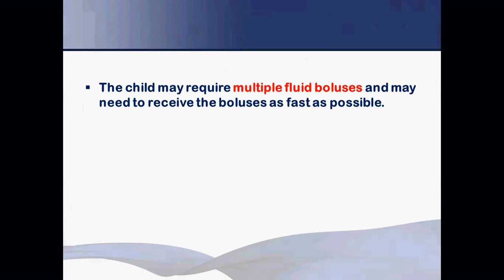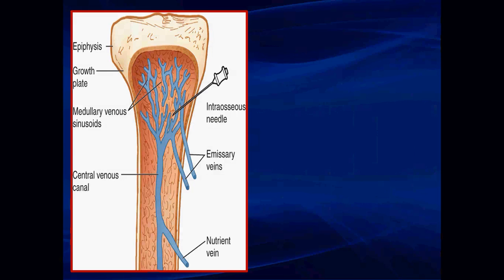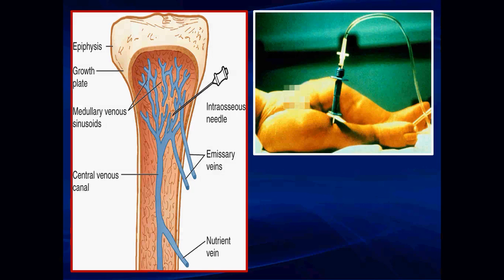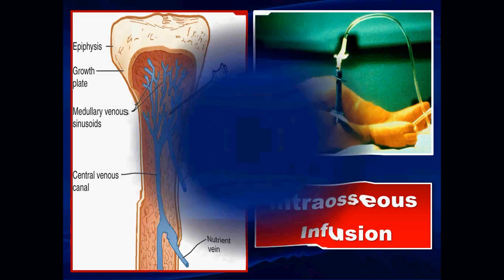The child may require multiple fluid boluses of 20 ml/kg, which can be repeated until the intravascular volume is restored. The initial resuscitation is complete when the child has adequate intravascular volume. Intraosseous access can be used via the medullary venous sinusoids of the tibia when IV access is not available; once hypovolemia is corrected, IV access becomes accessible and we switch to the standard route.